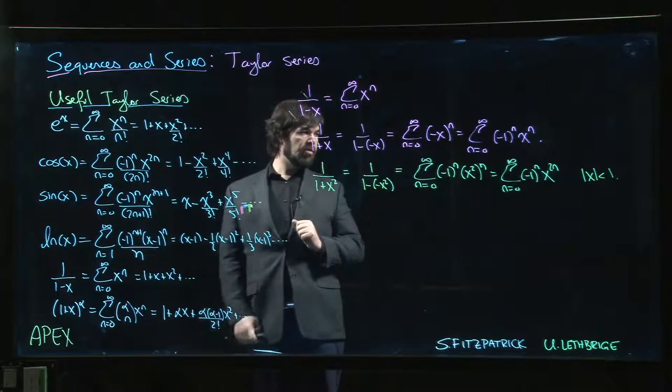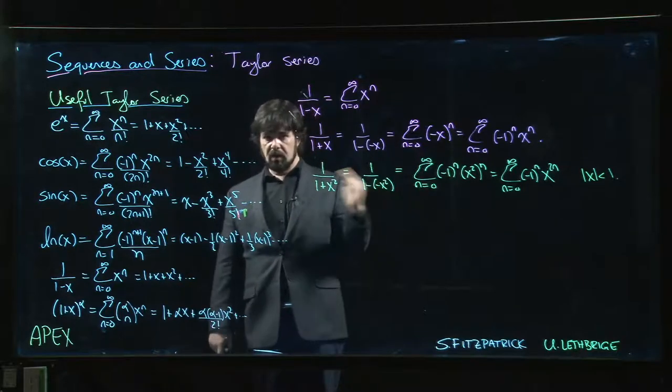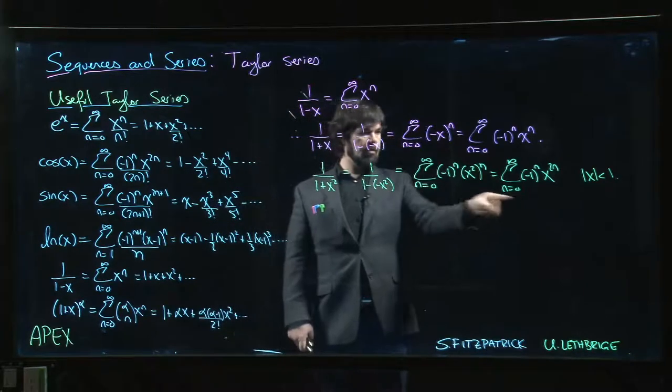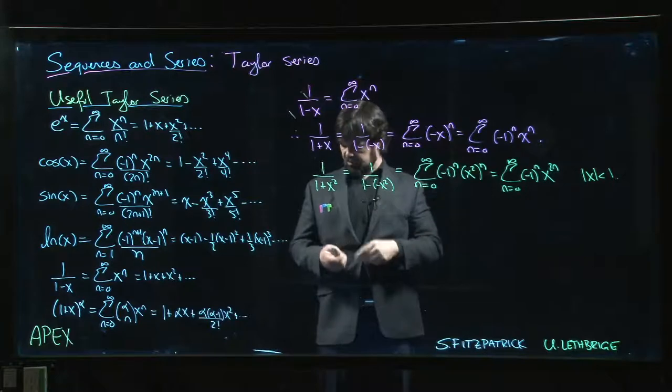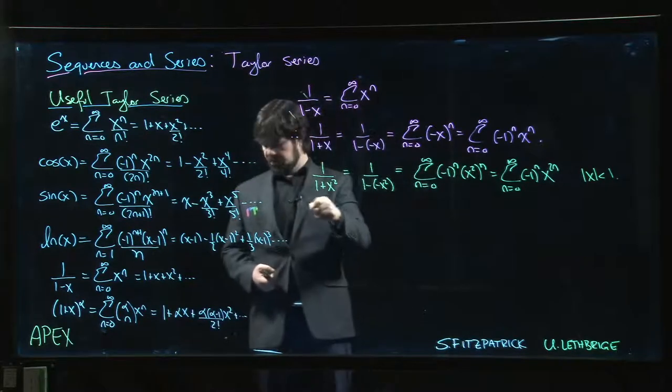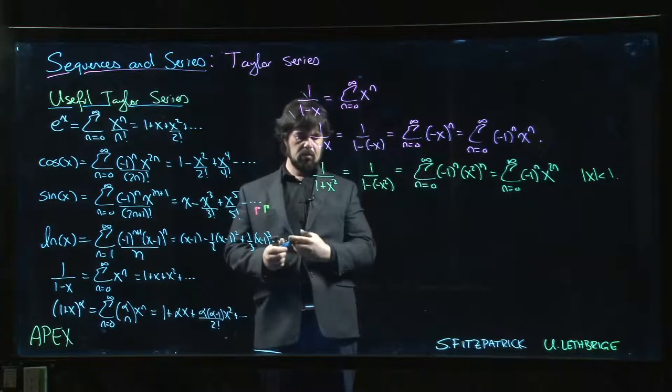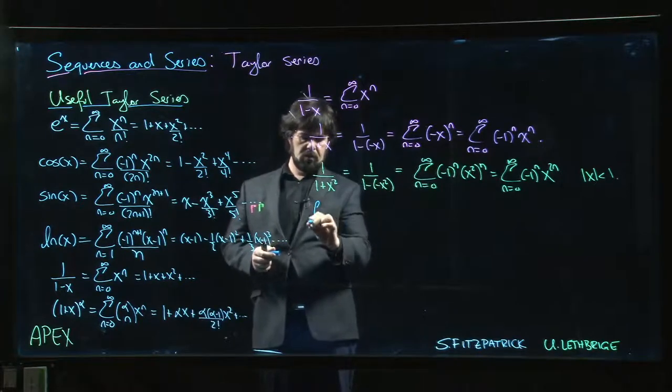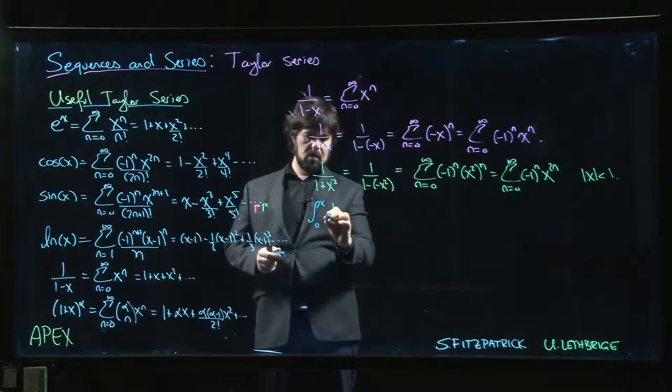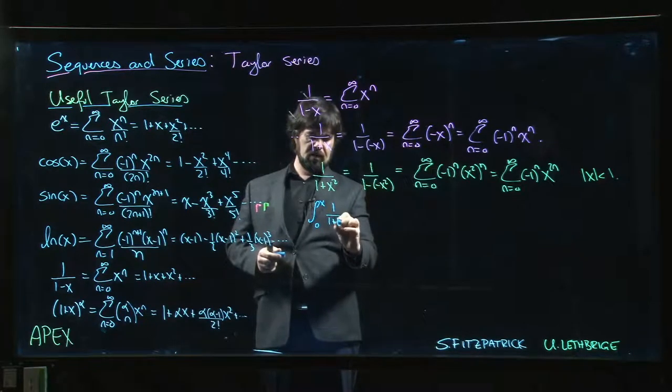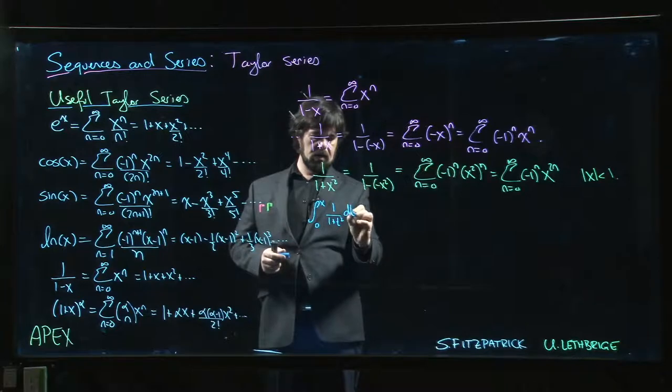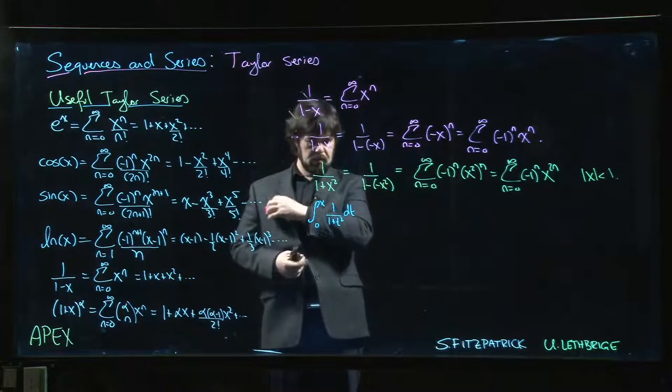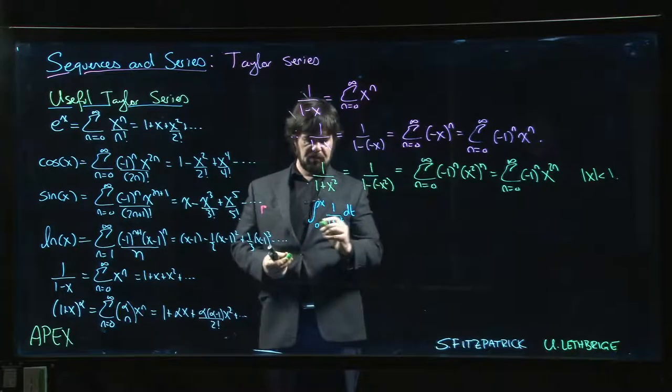But the other thing we know is that if we stay within our radius of convergence, we're allowed to do things like integrate and differentiate term by term. So what happens if we integrate both sides of this equation? What if I do the integral from, let's say, 0 to x of 1 over 1 plus t squared dt?